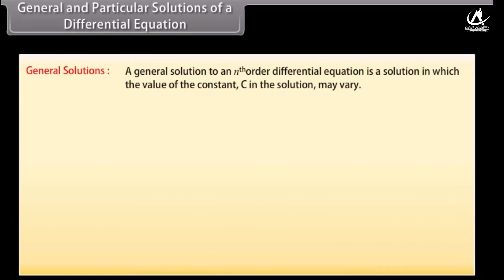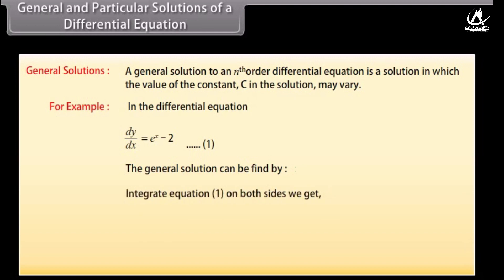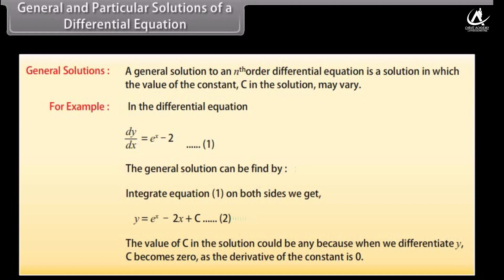General and particular solutions. A general solution to an nth order differential equation is one in which the value of the constant c may vary. For example, given dy/dx = eˣ⁻², integrate both sides to get the general solution: y = eˣ - 2x + c. The value of c can be any value, because when we differentiate y, c becomes 0 since the derivative of a constant is 0.